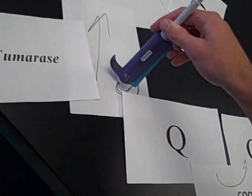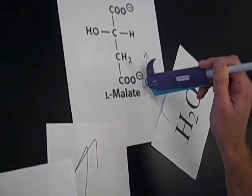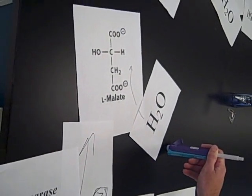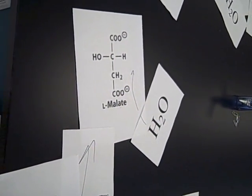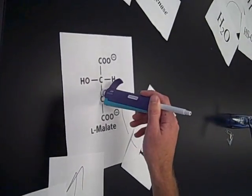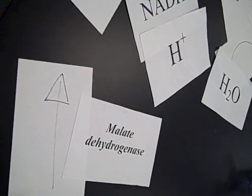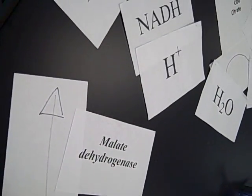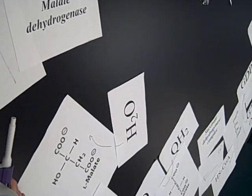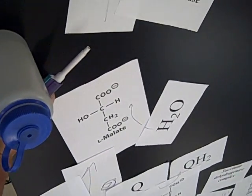Step seven is fumarate being catalyzed into L-malate. Since it's on the left side — excuse me — water is coming in to produce it, removing the double bond. The final step is caused by malate dehydrogenase, in which we go ahead and do a little bit of stereochemistry rearrangement to produce oxaloacetate.